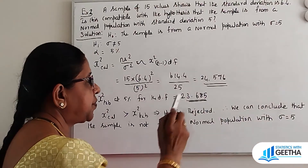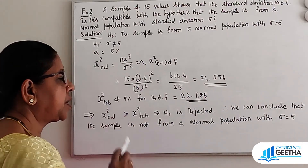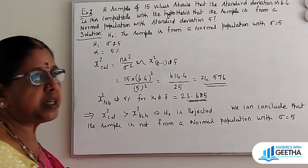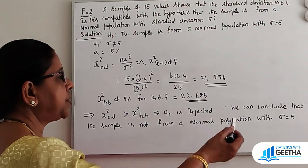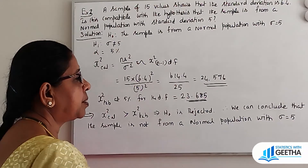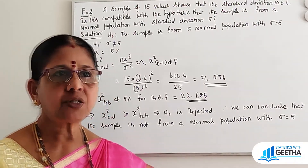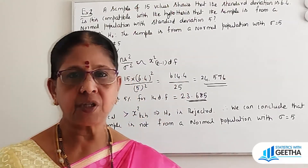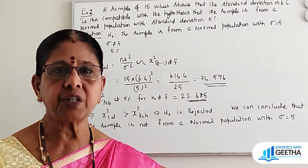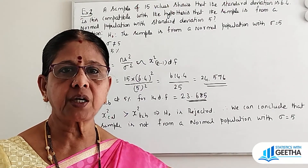Comparing these two values, chi-square calculated value 24.576 is greater than chi-square table value 23.685, which implies H0 is rejected. Therefore H1 is accepted, and we conclude that the sample is not from a normal population with sigma equal to 5.